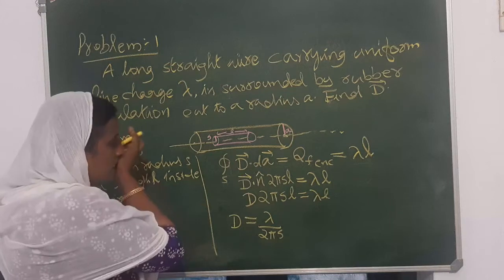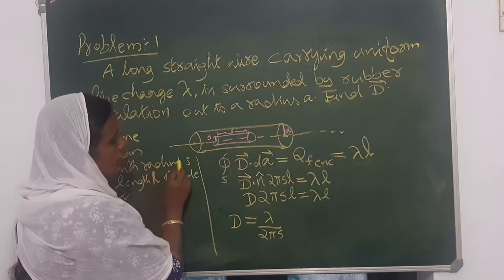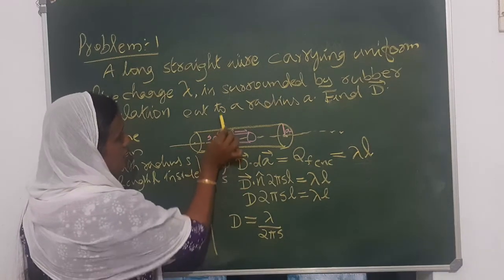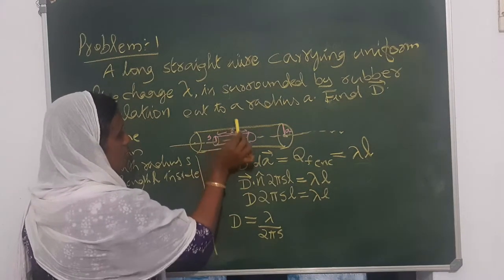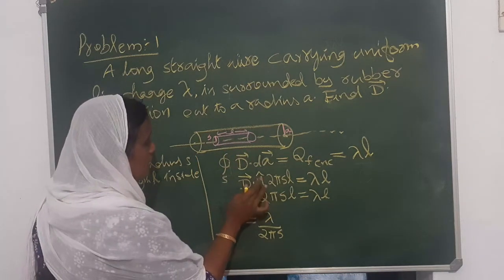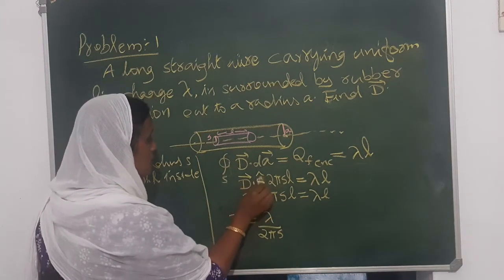And we know that here the electric displacement vector and the area vector is pointing like this, radially outward. So you can write here this as S cap. This is S cap.